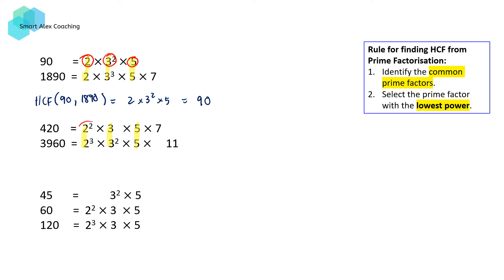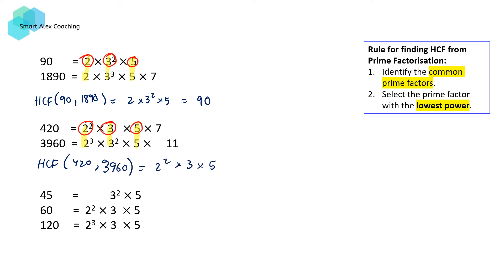So 2 squared and 2 cubed — 2 squared has got the lower power. 3 and 3 squared — 3 has got the lower power. And 5 are both of the same power of degree 1. Combining that together, we're going to get the HCF of 420 and 3960 to be 2 squared times 3 times 5, which is equal to 60.